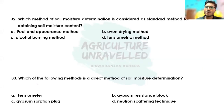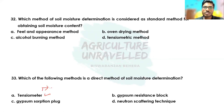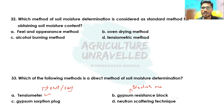Indirect methods estimate other parameters related to soil moisture content rather than soil moisture directly. For example, in the tensiometric method we estimate soil water potential or soil water tension, which is related to soil moisture content. In the gypsum resistance block method we estimate electrical resistance, and in the neutron scattering technique we estimate slow neutron counts — both related to soil moisture. Whereas alcohol burning method, oven drying method, and gypsum sorption plug method are direct methods of soil moisture estimation.